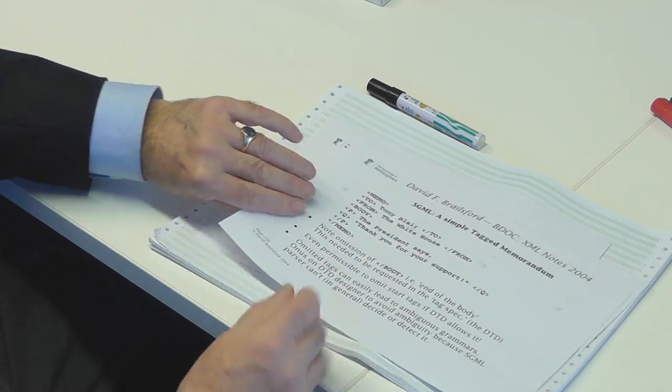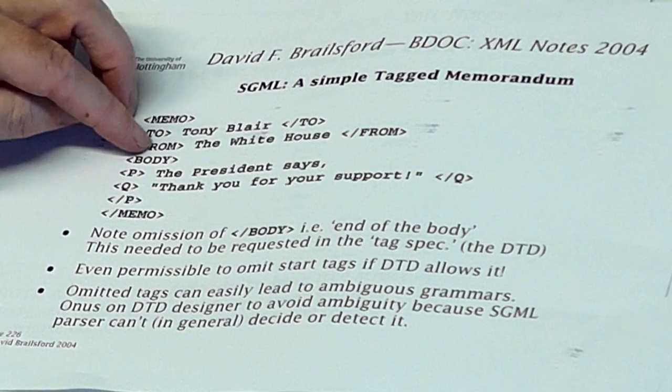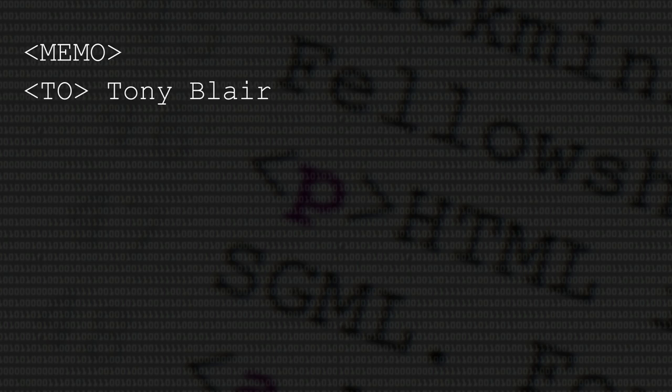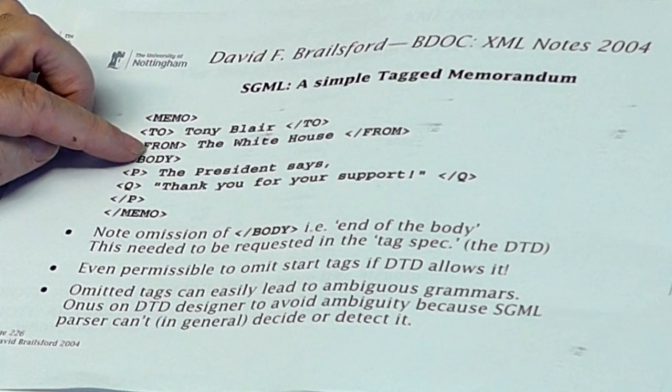From that tree, how does that translate into SGML notation? It's very similar to what you're now familiar with as XML notation. Here is a tag that says this whole thing is a memo, and this is where it begins. A to-tag — Tony Blair. End the to-tag. From — the White House. End of the from-part. Here comes the body. The tags themselves can trigger typesetting and stylistic decisions, if that's what you want to do.